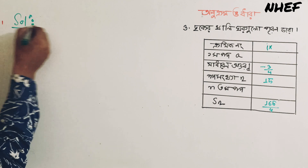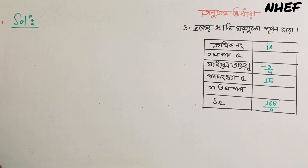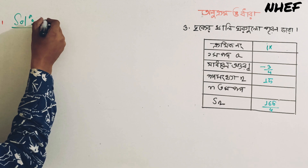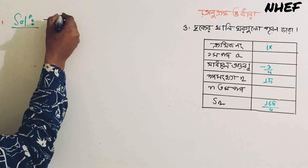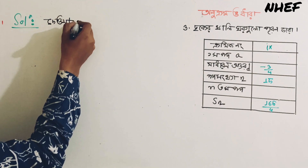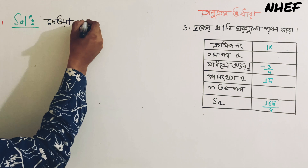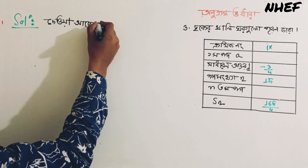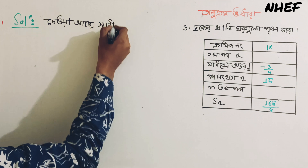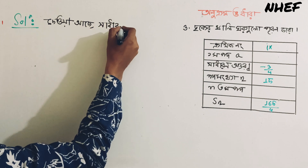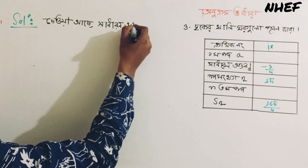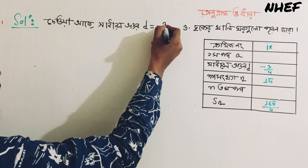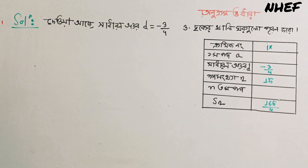Let's see — d is equal to minus 3 divided by 4. Very interesting.